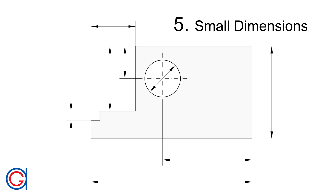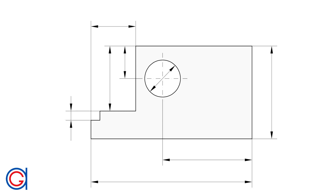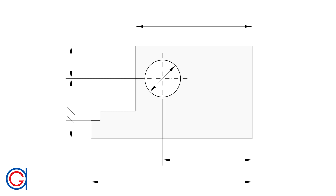Rule 5: Rules for smaller dimensions. When we don't have enough space to fit the arrowhead between the dimension lines, we locate them on the outside of the dimension lines. And if we don't have enough space to write the dimension value between the extension lines, you can also put it at one of the outside termination symbols. Another method is to use 45-degree angle termination symbols.